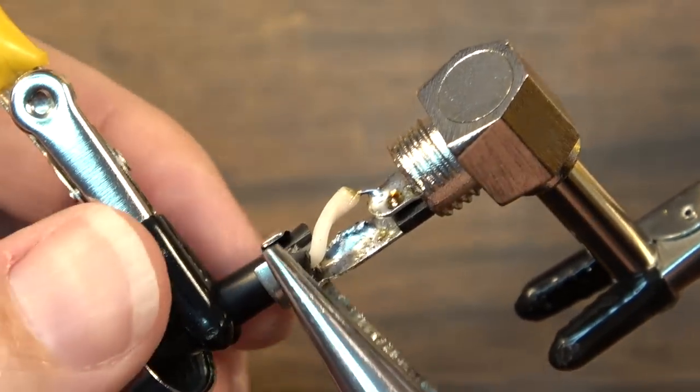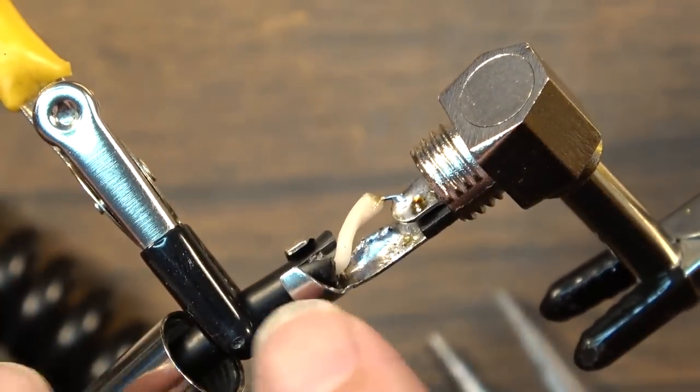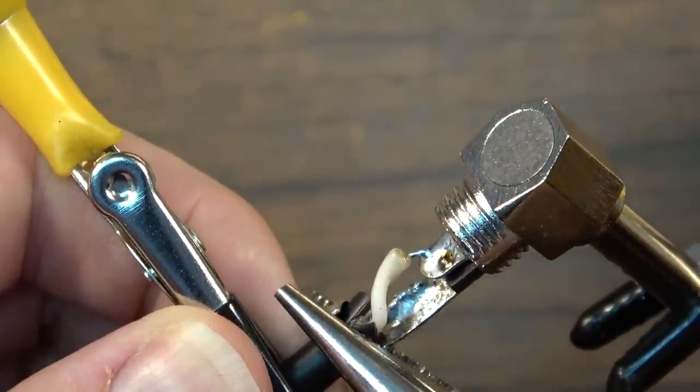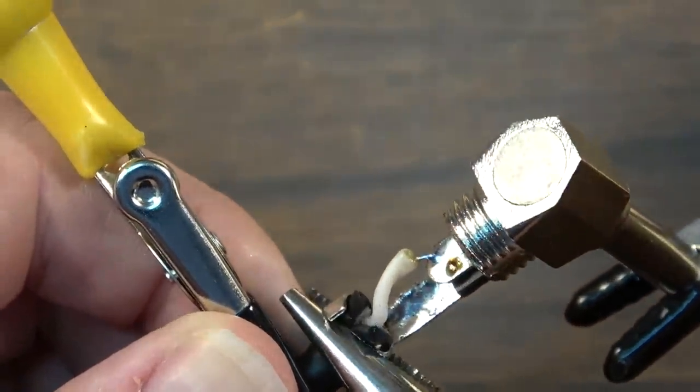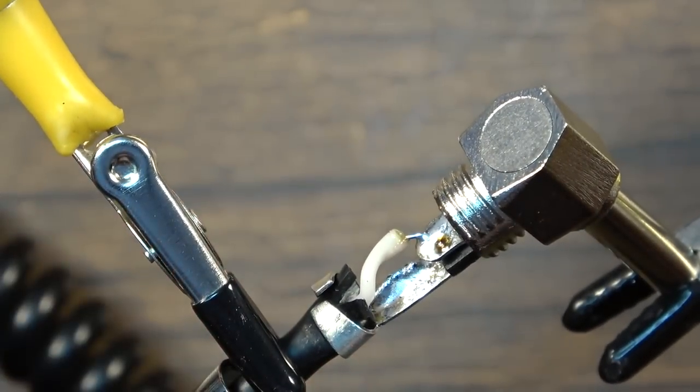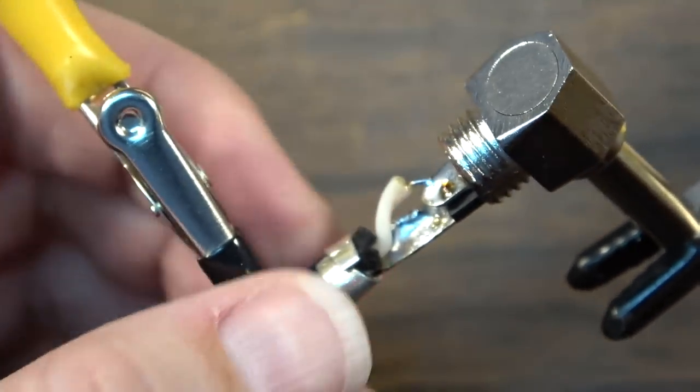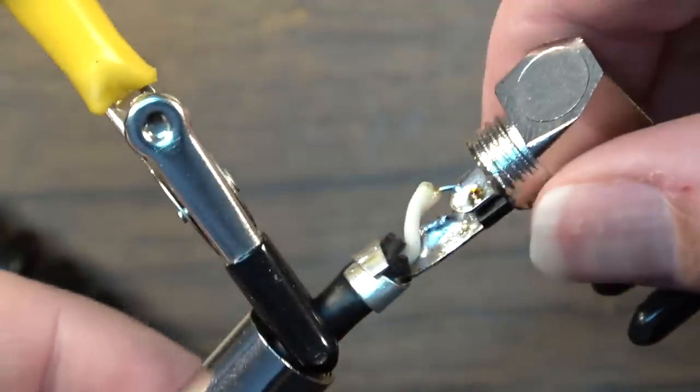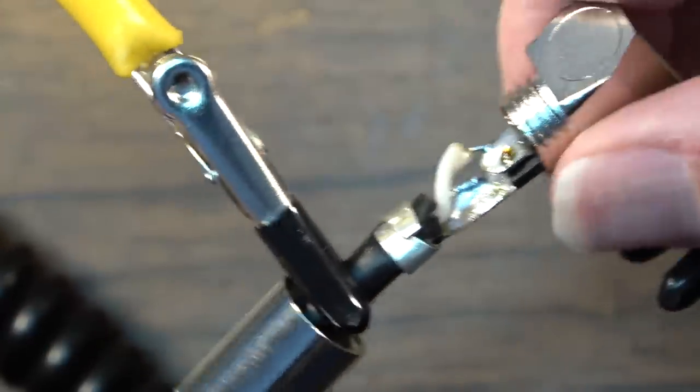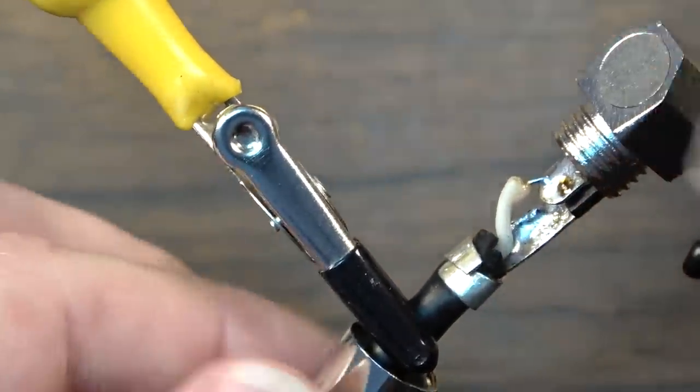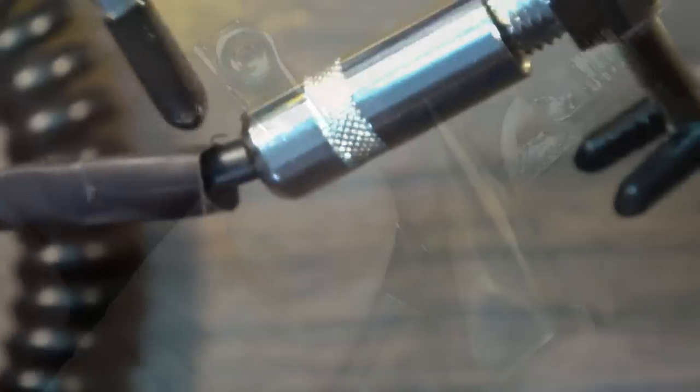Then we can come back in with some pliers. And we can squeeze this strain relief down, which is what that is. And it needs to be nice and tight. But it doesn't need to be to the point where it's pinching the wires or going through the insulator. Okay. But you do want it, you know, you do want it good and pinched. Because that is when you pull the cable, it's going to be pulling on this point and not your connections.